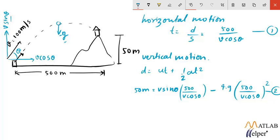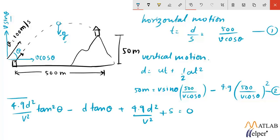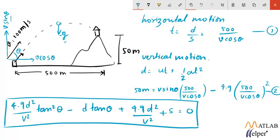Now since we have to calculate the value of theta, this entire equation can be represented in the form of a quadratic equation with respect to tan theta. So this is the final equation which will be implemented in Simulink, and we will solve this equation for the value of tan theta.